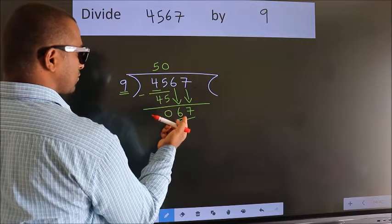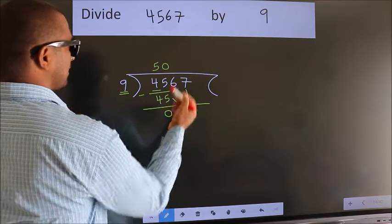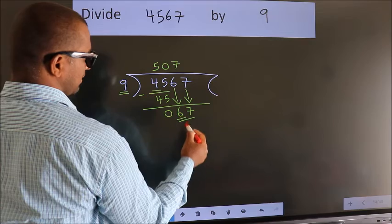A number close to 67 in the 9 table is 9 sevens, 63.